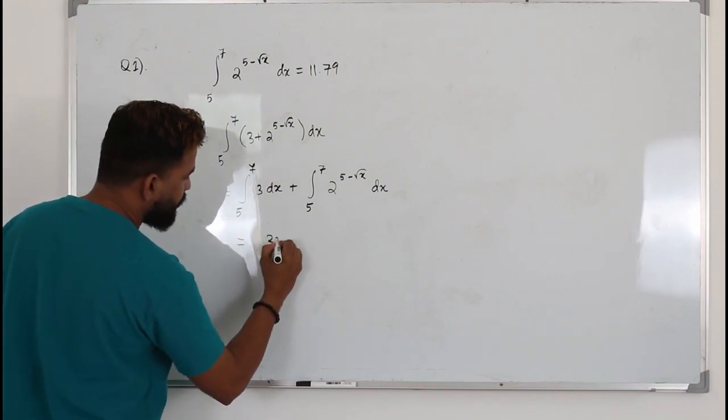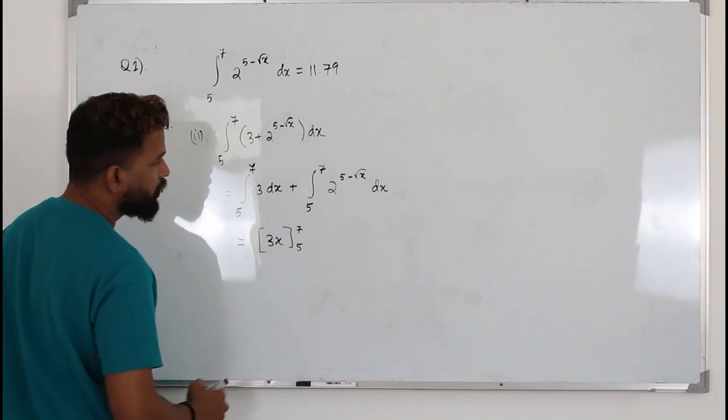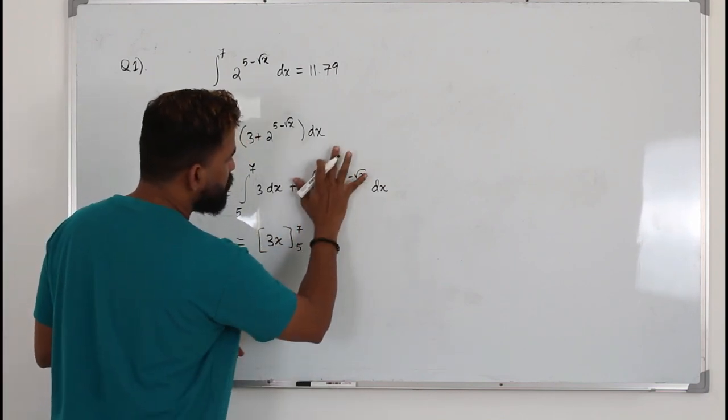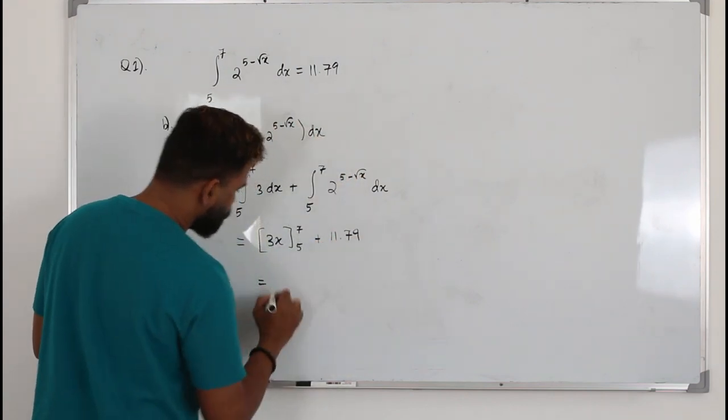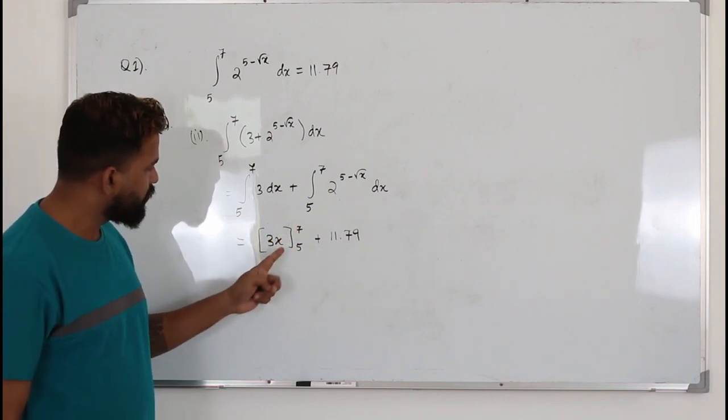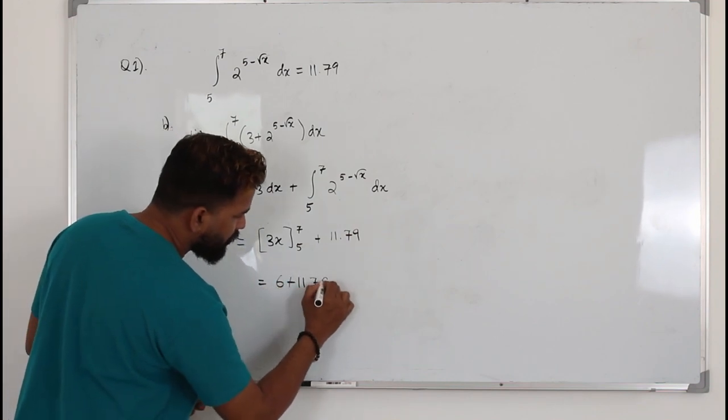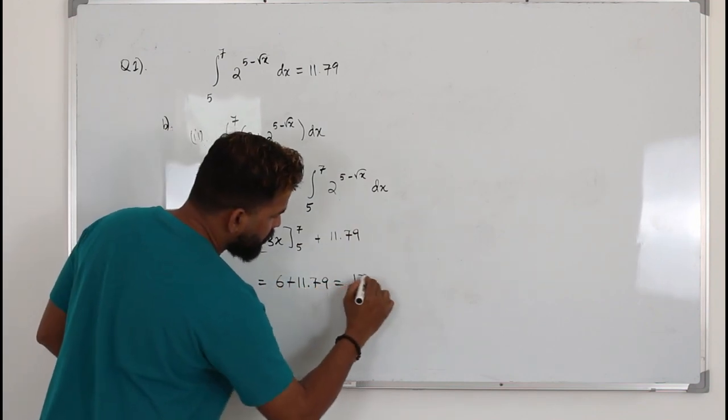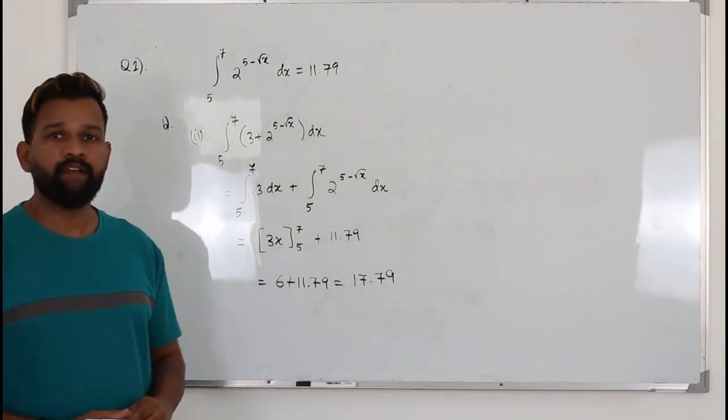The first one, of course, you have to integrate this. When you integrate a constant, you will get x. Put the limits 5 and 7. And when you integrate this, you will get this value, 11.79. Here, substitute the upper limit minus the lower limit: 7 minus 5, you get 2, 3 times 2 plus 6, plus 11.79. Your answer will be 17.79. And that's how you solve this.